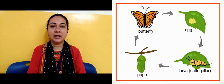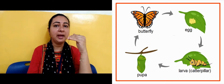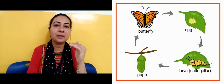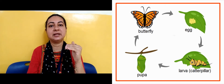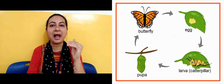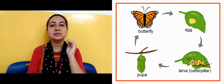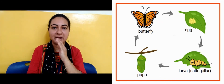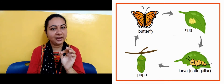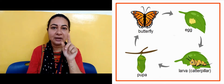As we can see in the image, a cycle is drawn. We can see eggs, then an arrow, then larva — also called caterpillar — then pupa, then another arrow pointing to butterfly. This is the life cycle of a butterfly.